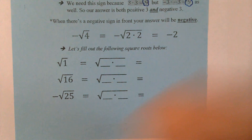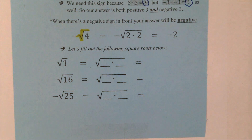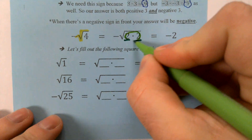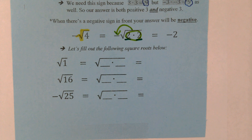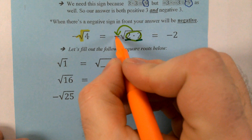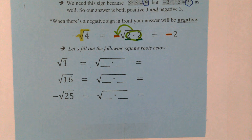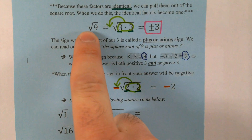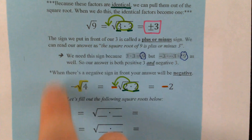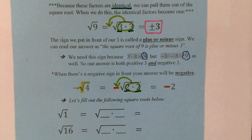We start with the negative square root of 4. We break 4 up into its factors — 2 times 2. Because we have identical factors, we take them out and bring them in front, getting rid of the square root sign altogether. But we do still have that negative in front. This minus sign means our answer is not going to be plus or minus 2 — it's just going to be negative 2. So the key thing: when there's no negative sign in front, we say it's both positive and negative. But if there's a negative out in front, our answer is just negative.